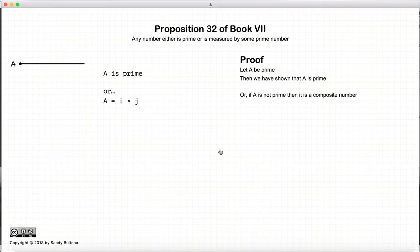Now if a is not prime, then it is a composite number. And if it's a composite number, then from the previous proof, 31 of this book, then some prime number measures a.